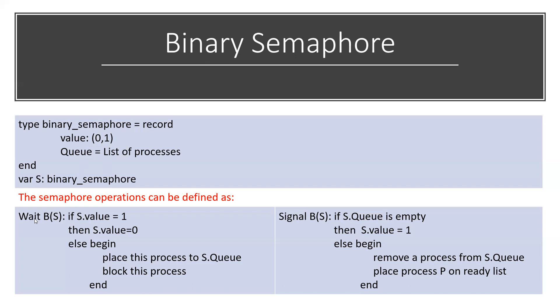The wait and signal operations are very simple, similar to previously. When a process is in the entry section, the wait operation is performed. After the wait operation, the particular process occupies the critical section. When it leaves the critical section, the signal operation is performed. So for this binary semaphore we have wait operation and signal operation.